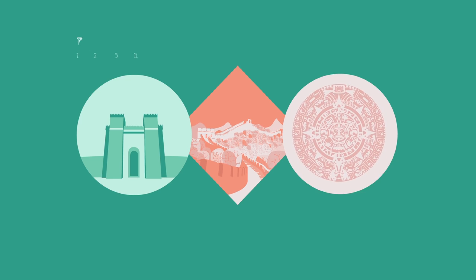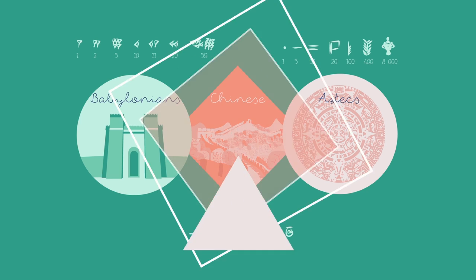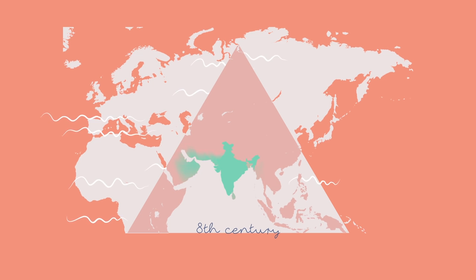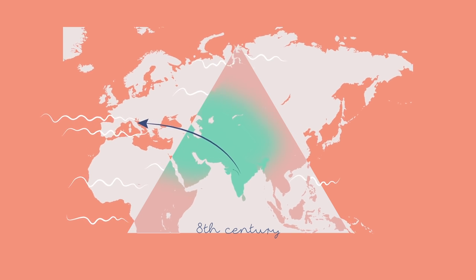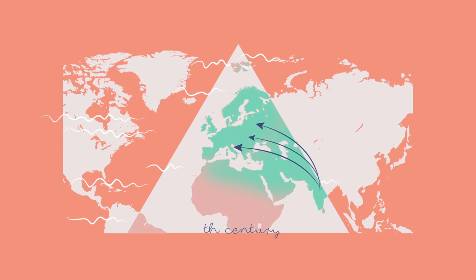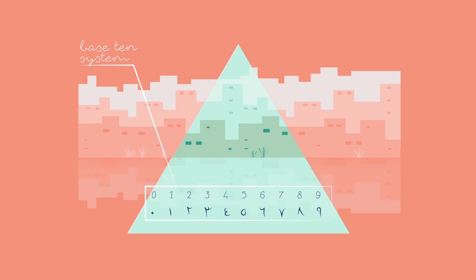Several civilizations developed positional notation independently, including the Babylonians, the ancient Chinese, and the Aztecs. By the 8th century, Indian mathematicians had perfected such a system. And over the next several centuries, Arab merchants, scholars, and conquerors began to spread it into Europe. This was a decimal, or base 10 system, which could represent any number using only 10 unique glyphs.